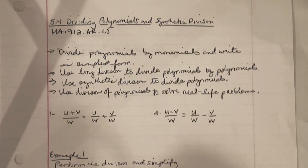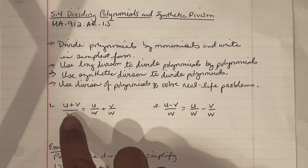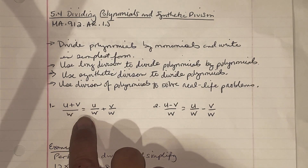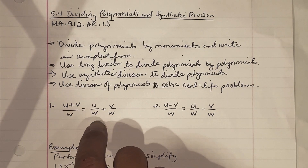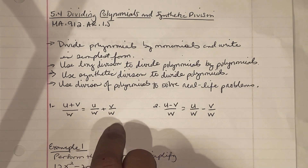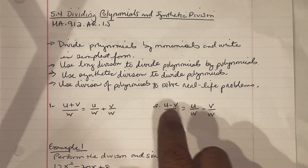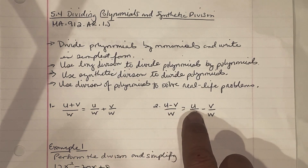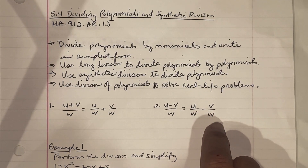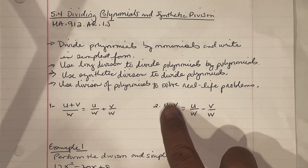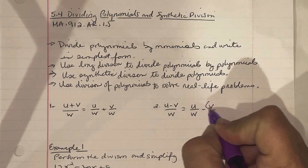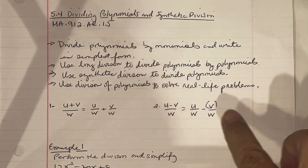Some rules to remember: if we see (u + v) over w, it can be written as u over w plus v over w. If we see (u - v) over w, then we have u over w minus v over w. Remember to put parentheses around the numerator when doing a situation like this.